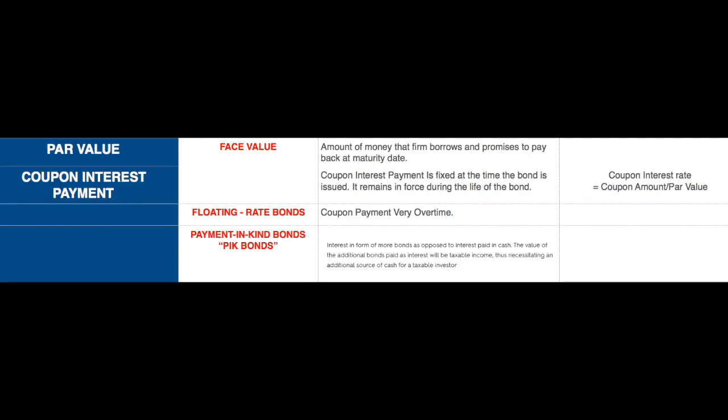Now we are going to discuss some key characteristics of bonds. Par value is the stated face value of the bond. For illustrative purposes, we generally assume a par value of $1,000. Par value is the amount of money that the firm borrows and promises to pay back at the maturity date.